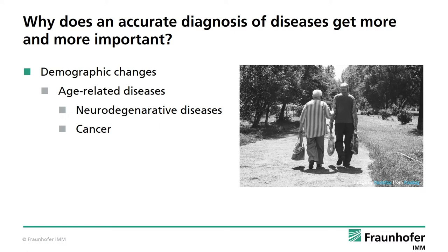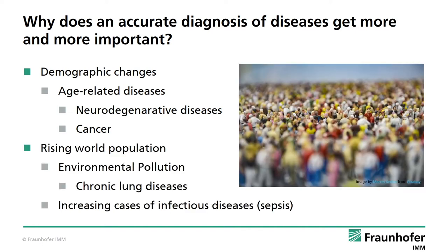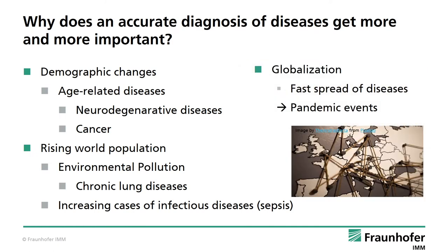These days, three topics make an accurate diagnosis so relevant. First, demographic changes lead to an increase of age-related diseases such as neurodegenerative diseases or cancer. Due to environmental pollution, chronic diseases of the lung but also infectious diseases become more and more prominent in daily life. Last but not least, globalization and the easy way to travel from one country to another may lead to a fast spread of diseases, as currently seen by the worldwide spread of COVID-19.